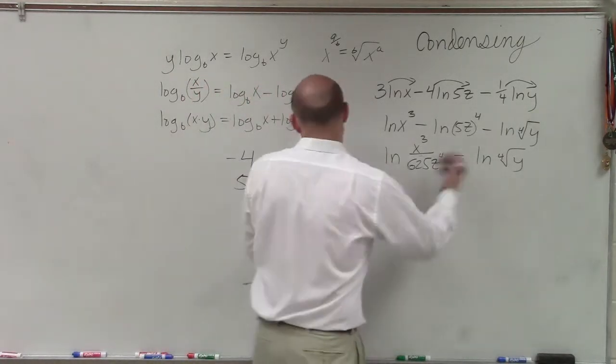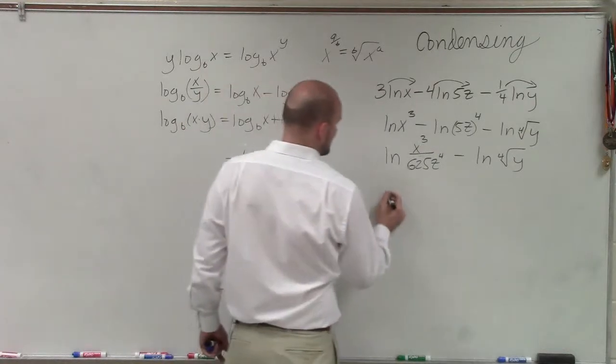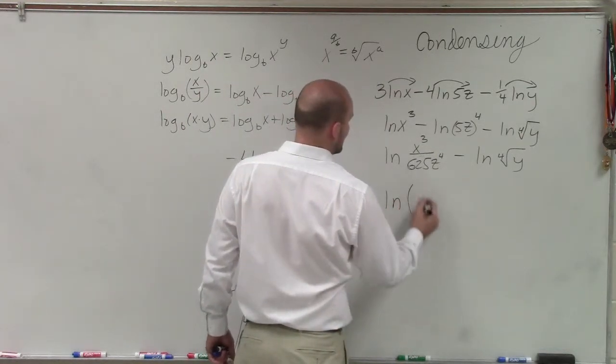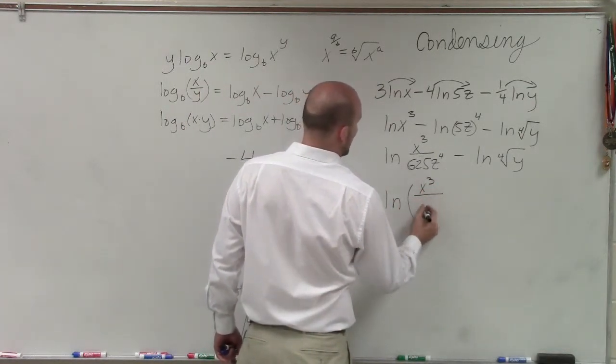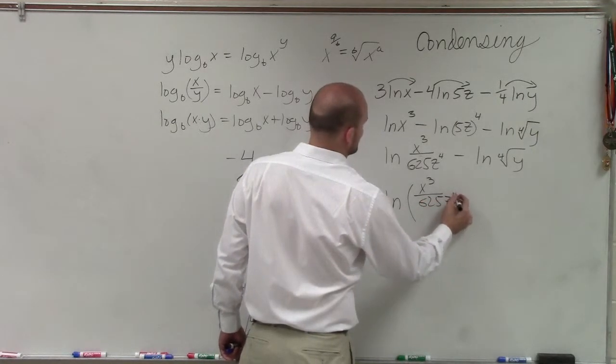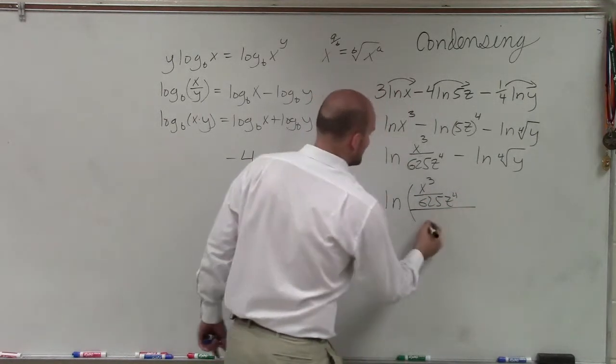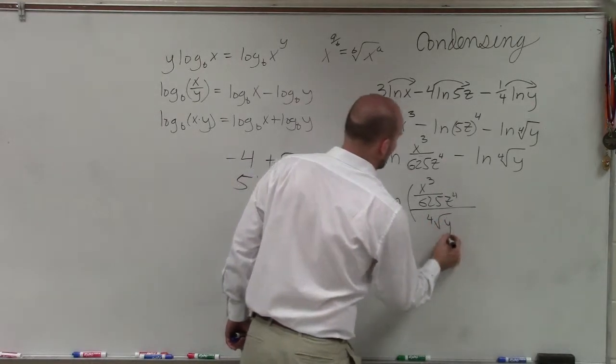Well, that's exactly what you need. You need to divide now this again. So therefore, now this is ln of x cubed divided by 625 z to the fourth divided by the fourth root of y.